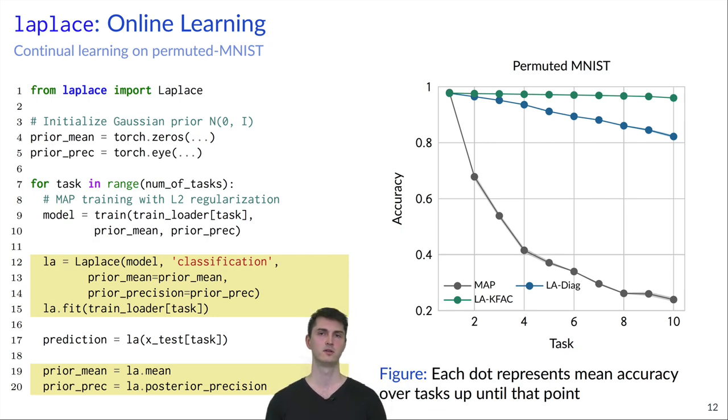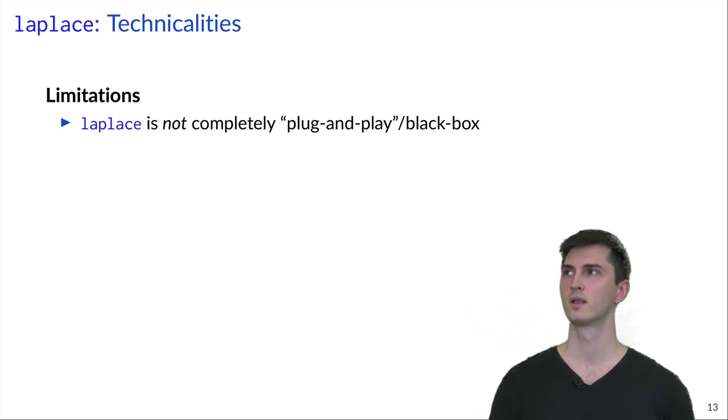Finally, online learning and in particular continual learning. This is the task where you want to train on multiple tasks sequentially without revisiting the data of previous tasks and retain performance across all tasks. Here, it's very easy to do this with the Laplace approximation because our library can take a prior mean and prior precision as parameters and you can simply choose the posterior covariance and posterior mean as the prior for the next task. You can see in the figure that, especially if you're using a structured approximation such as KFAC, the performance stays almost the same across tasks.